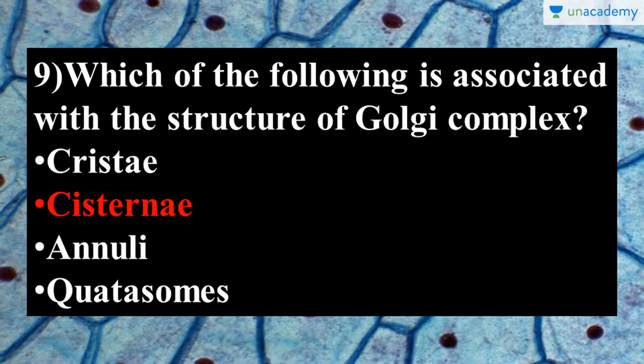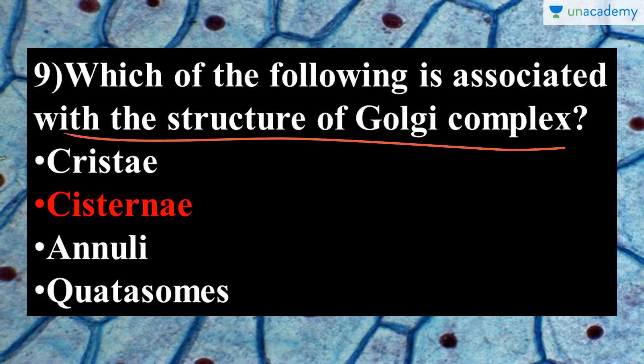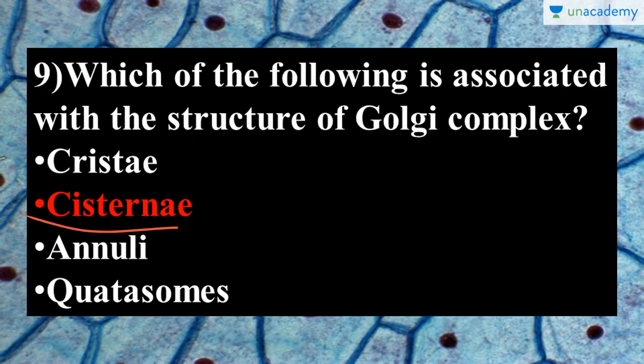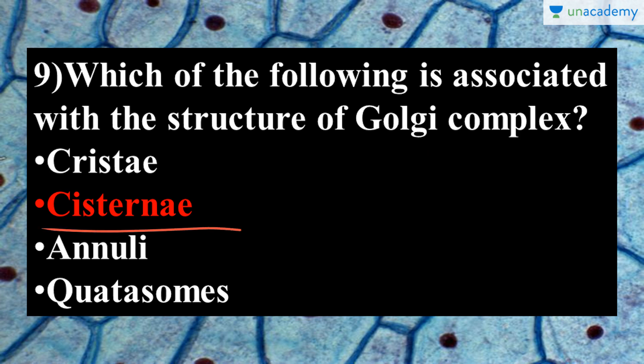The next question is: which of the following is associated with the structure of the Golgi complex? I have discussed the Golgi complex separately in one of my lessons — you can also refer to the NCERT book. The Golgi complex is a flattened disc-shaped organelle with various infoldings arranged in a pancake shape, creating cisternae. So the answer is cisternae.